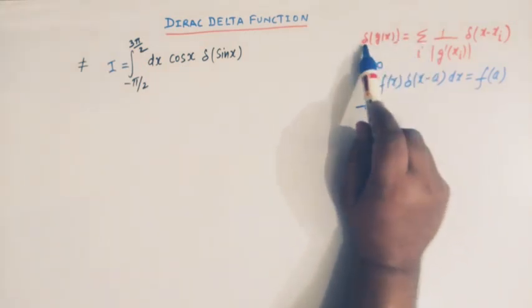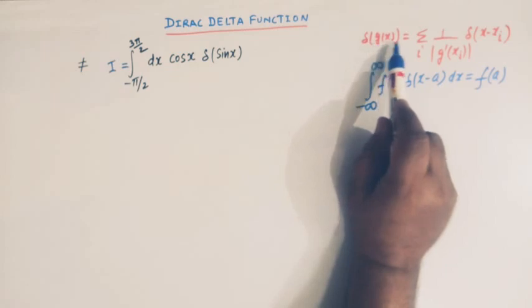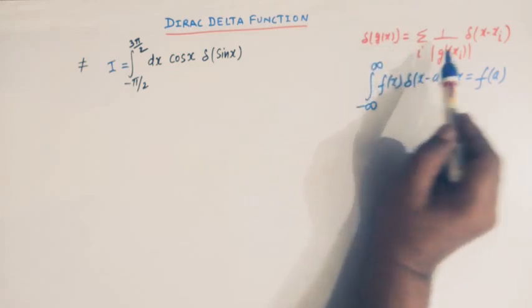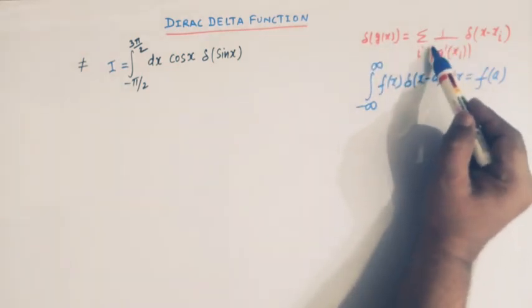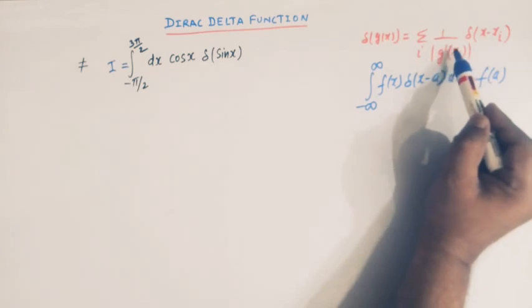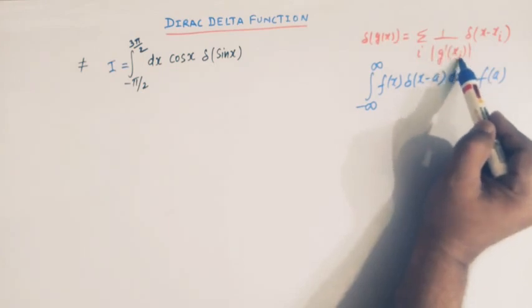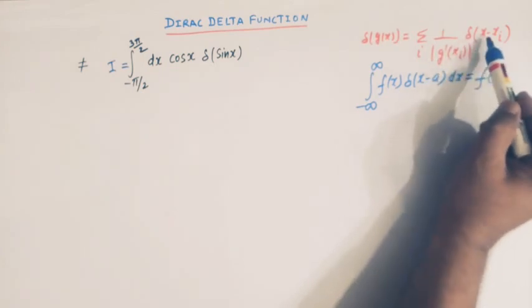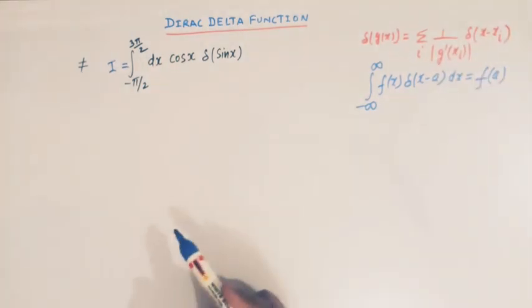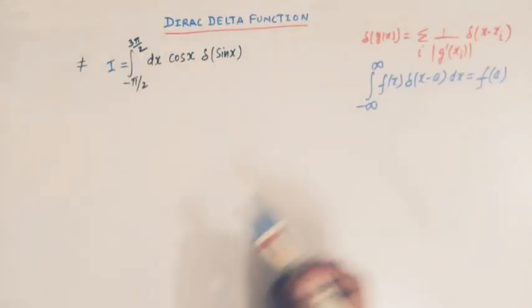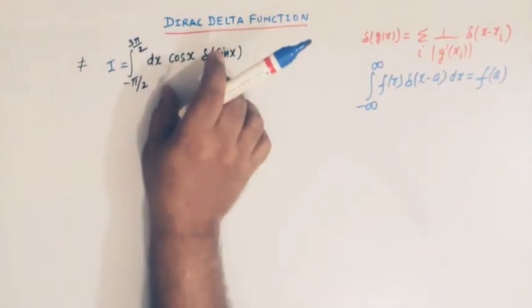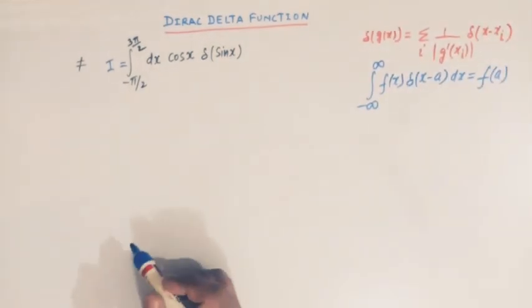We will make use of this property: δ(g(x)) = Σᵢ (1/|g'(xᵢ)|) · δ(x − xᵢ). Now let us use this property to evaluate this integral.